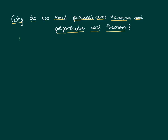We know that moment of inertia of any system is the summation of the product of mass of each particle with the square of the distance. We also know that moment of inertia changes whenever the axis of rotation changes. For example, if we have a body and we have calculated the moment of inertia about one axis, we identify the mass of each particle, identify the distance of each particle from the axis of rotation, calculate m·r² for each particle, and add it for all the particles.